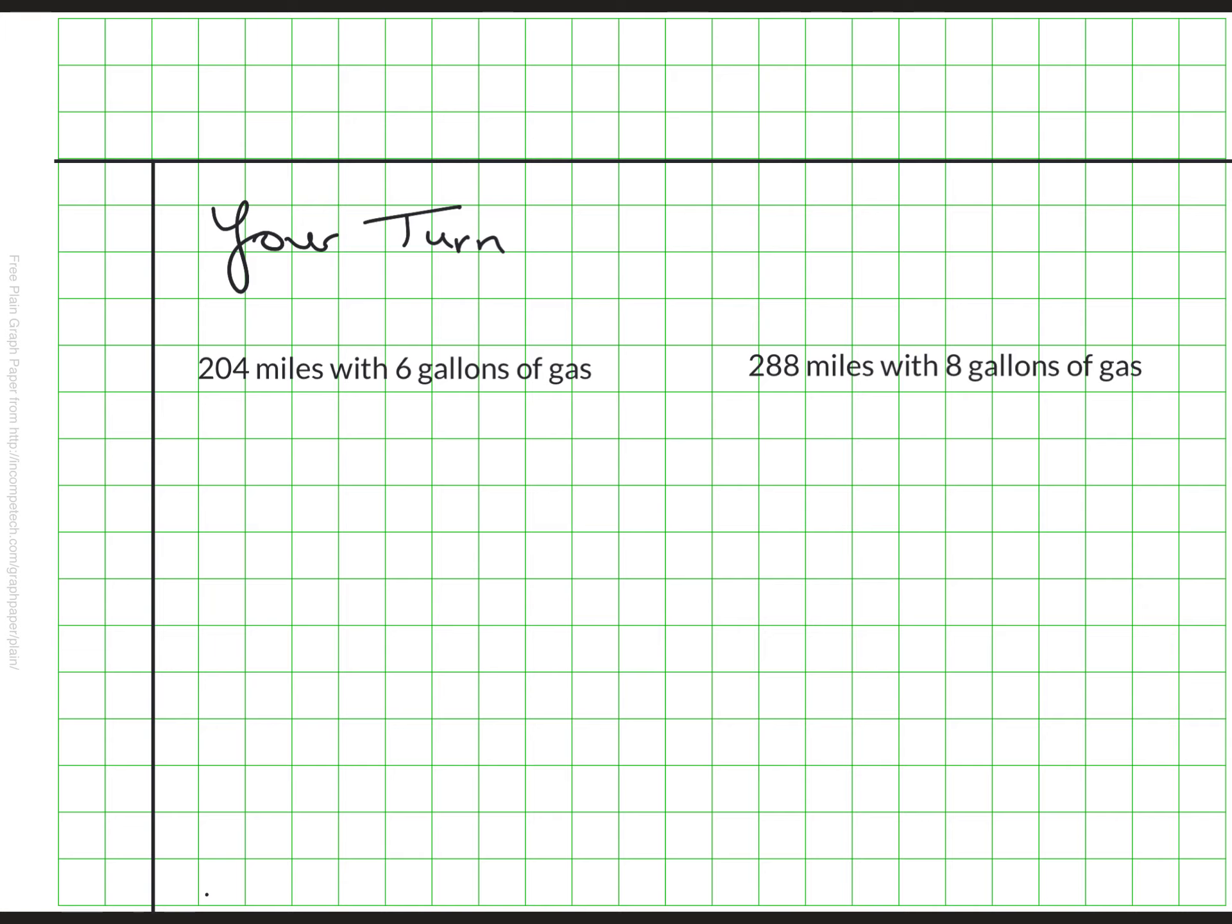For your turn, I'd like you to compare these two cars. We have car A and car B. And one goes 204 miles with six gallons of gas. The other 288 miles with eight gallons of gas. I'd like you to find the unit rate of both and be able to say which one goes further on a gallon of gas. And remember, the essential question was to use, how do we use unit rates to compare different rates? And so that will be a chance for you to try that on your own. Be sure to bring any questions to class as we continue to work on this together.